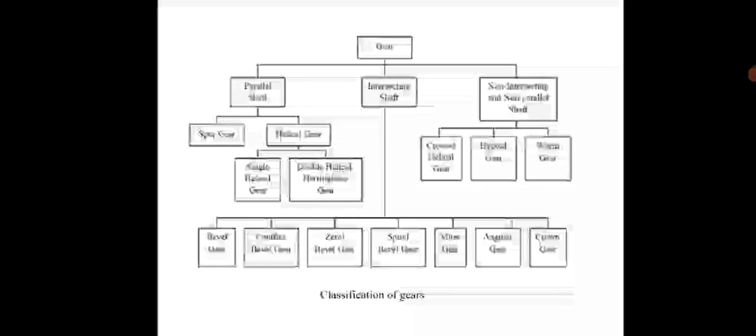The gears are classified into three types: parallel shaft, intersecting shaft, and non-intersecting and non-parallel shaft. Parallel shaft includes spur gears and helical gears. Helical gears are classified into single helical gear, double helical, and herringbone gear. Intersecting shaft includes bevel gears: crown gear, bevel gear, zerol bevel gear, spiral bevel gear, miter gear, angular gear, and crown gear. Non-intersecting and non-parallel shaft gears are crossed helical gears, hypoid gear, and worm gear.